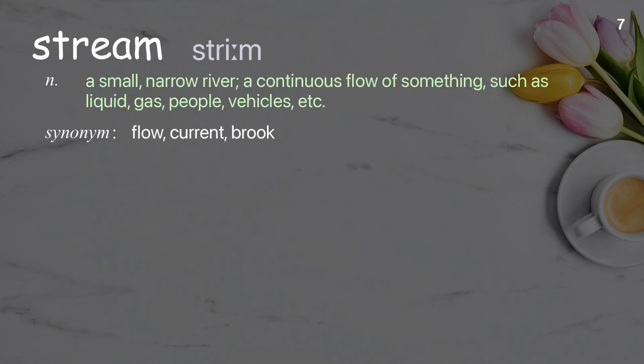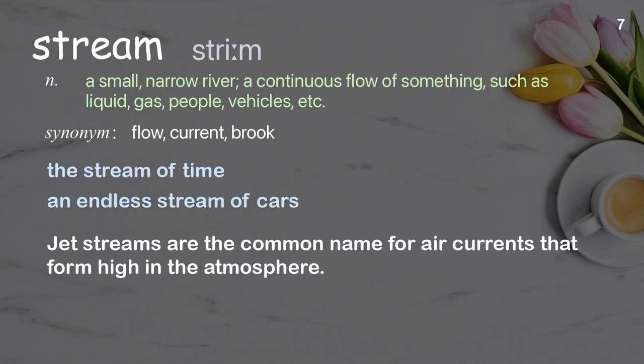Stream: a small narrow river; a continuous flow of something such as liquid, gas, people, vehicles, etc. Examples: the stream of time, an endless stream of cars. Jet streams are the common name for air currents that form high in the atmosphere.